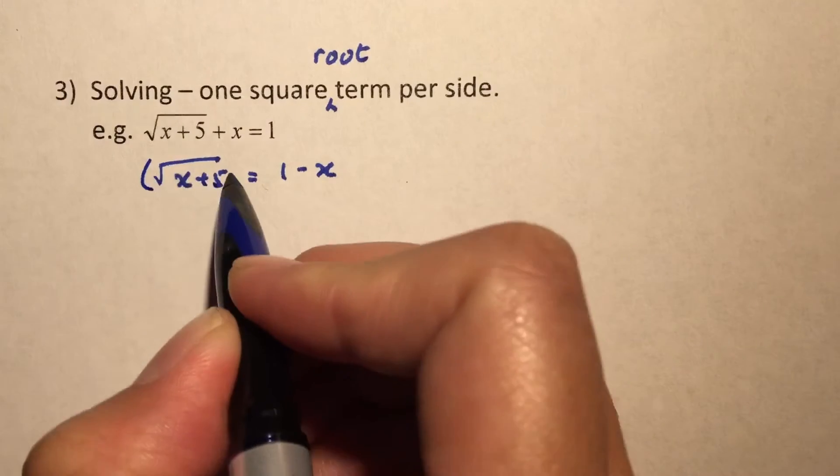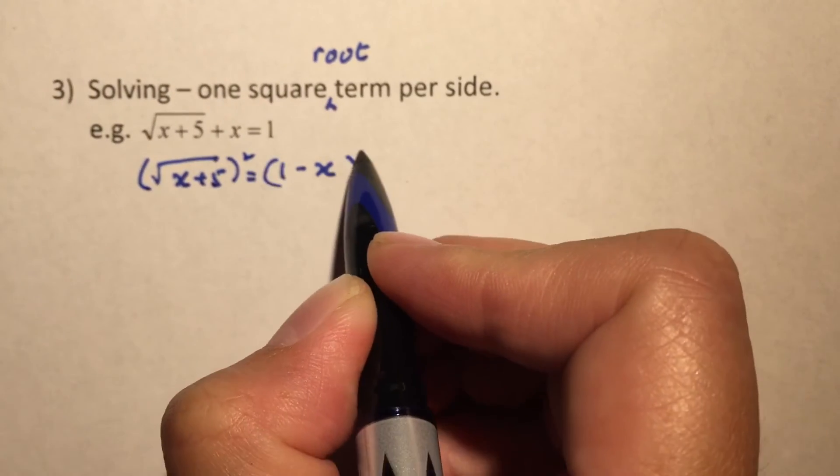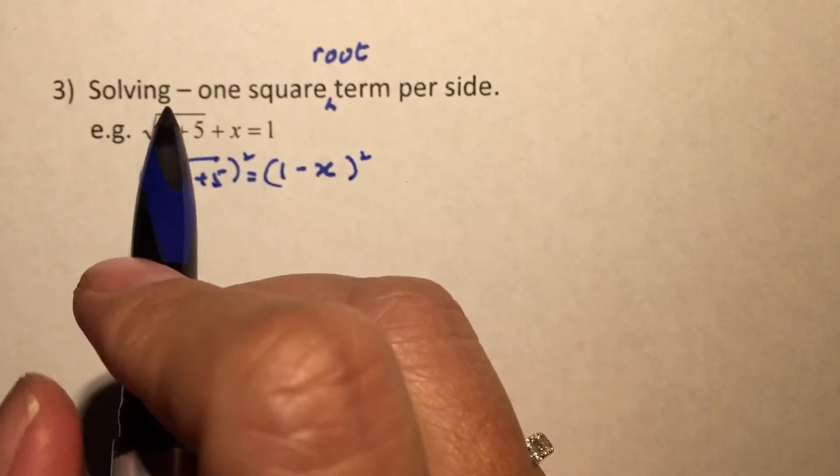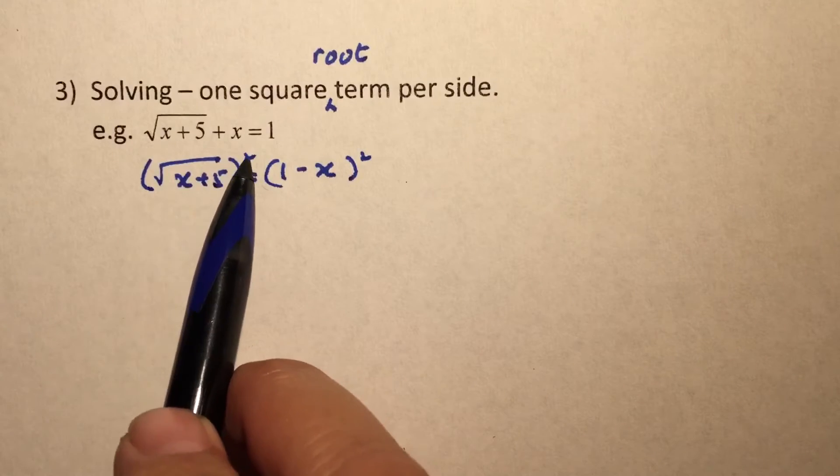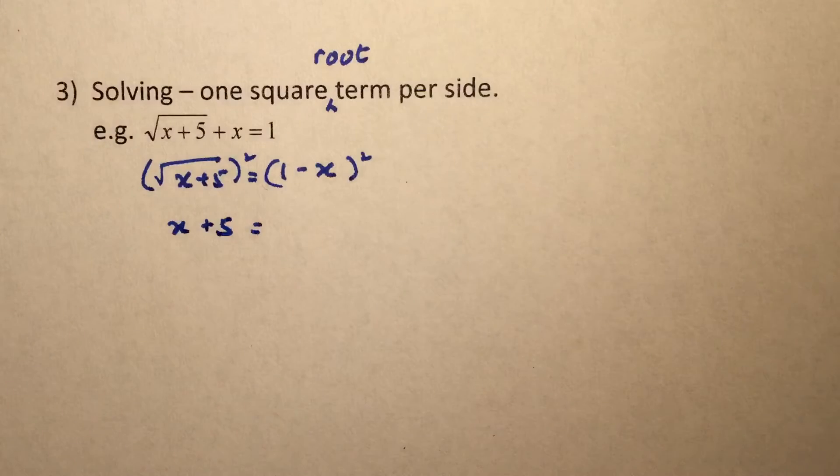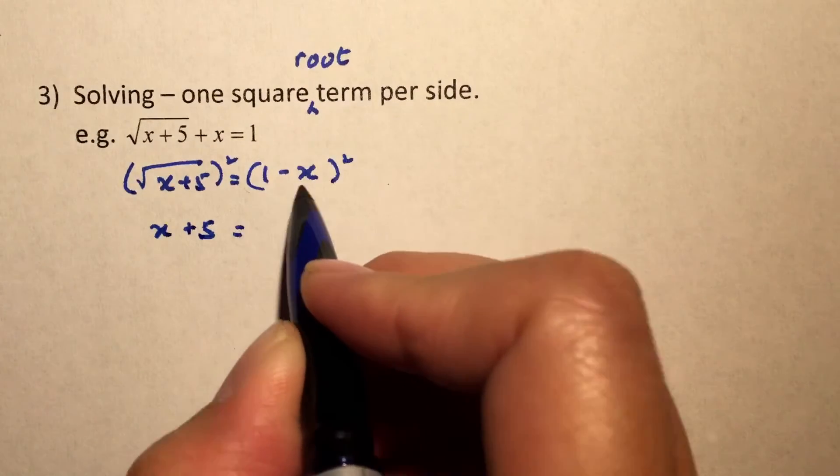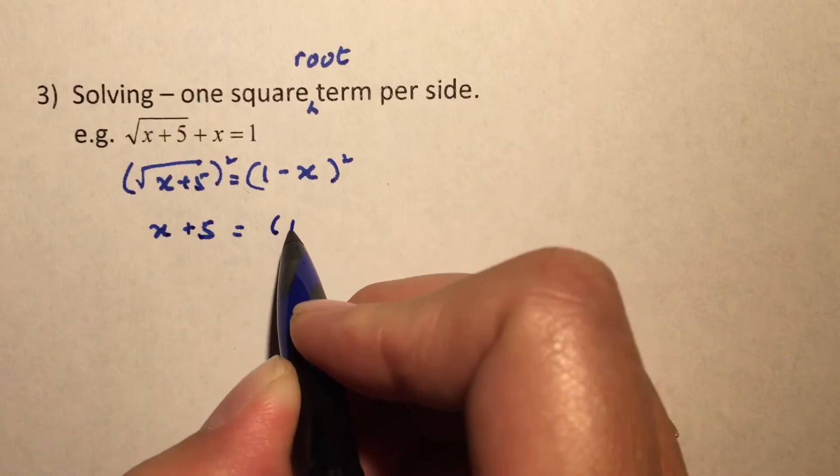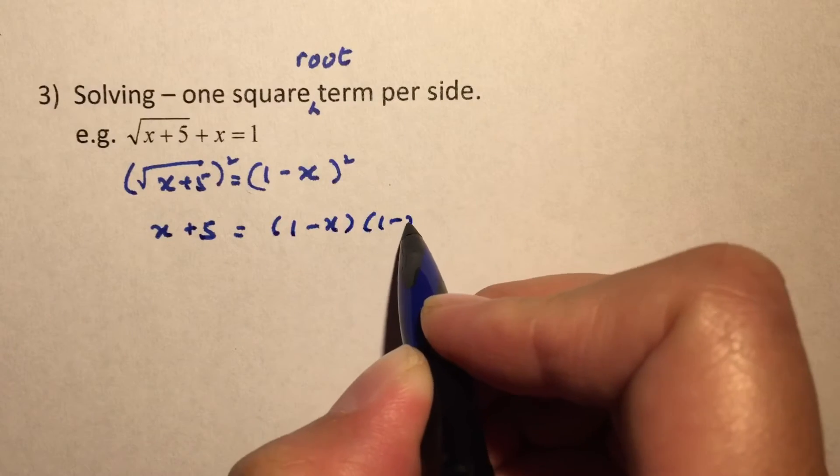Now we are going to do the squaring. We will be able to see that when you have a square root and you square, it's as if there is no more the square root. On the right-hand side, we will have 1 minus x squared. So, this is 1 minus x, 1 minus x. Write it out twice.